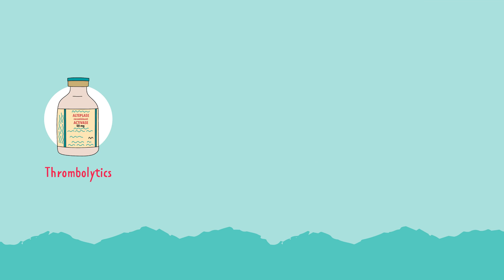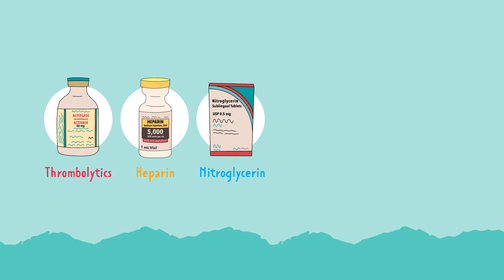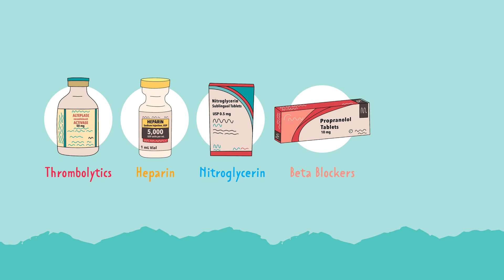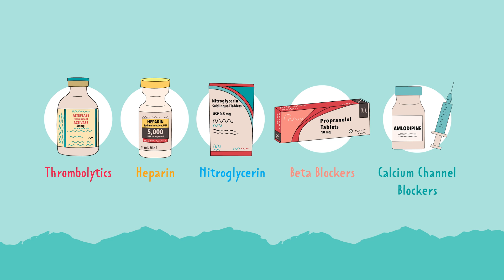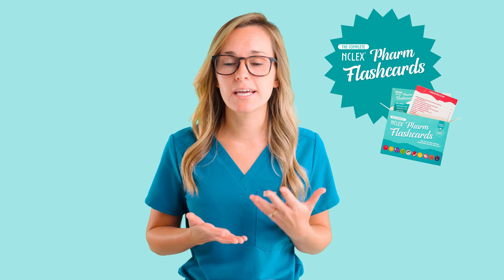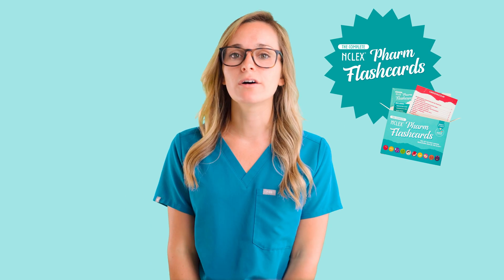There are many medications used when caring for a patient with an MI. Thrombolytics — our clot busters — are an immediate treatment to break down the clot. Heparin IV may be administered to prevent another blockage while the heart recovers. Nitroglycerin helps the heart to rest by opening the vessels to let blood pass without much resistance. Beta blockers are used to reduce pressure and the heart's workload, and calcium channel blockers are used to relax the heart and let it rest. For more information on these medications, you can find it in the complete NCLEX pharmacology flashcards.